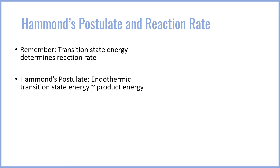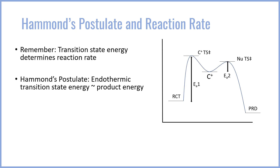In other words, if the product is really high in energy, the transition state must also be high in energy. If the product is lower in energy, the transition state will be lower in energy. In the case of an SN1 reaction, the product of the rate-determining step — the first step — is the formation of a carbocation. That is an endothermic process, and so the energy of the transition state is directly related to the energy of the carbocation. A more stable carbocation has a lower transition state energy, and a more unstable carbocation has a higher transition state energy.